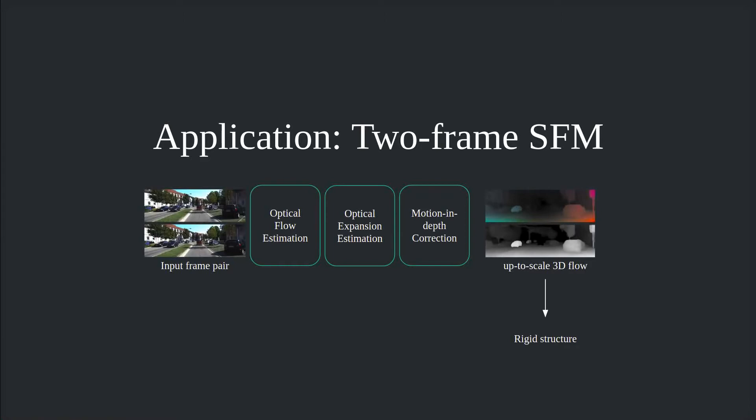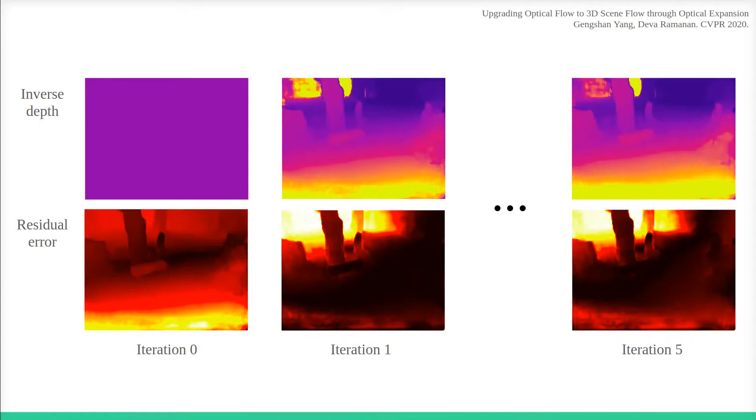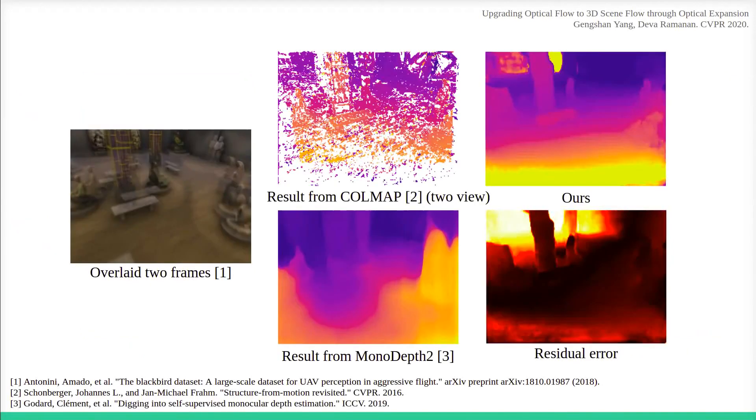To do so, we feed our up-to-scale 3D flow estimates into an iterative solver, similar to bundle adjustment, that minimizes the 3D error. We are able to produce dense and reliable depth without strong priors using dense motion and depth estimates.